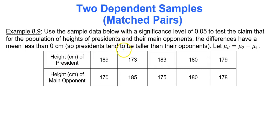Use the sample data below with a significance level of 0.05 to test the claim that for the population of heights of presidents and their main opponents, the differences have a mean less than 0 centimeters. Our claim is that the mean difference is less than 0 centimeters. We're going to define μ sub d as being group 2 minus group 1. So mean difference is less than 0, μ sub d is less than 0. Would that go with the null or the alternative? Since it does not contain equal to, it has to go with the alternative. The null is always going to be equal to 0. The mean difference among the population is equal to 0. Our claim is the alternative hypothesis.